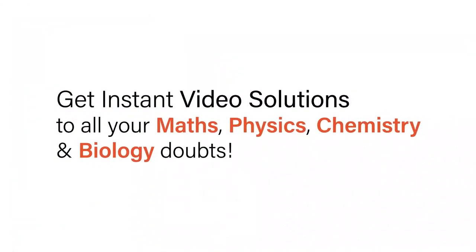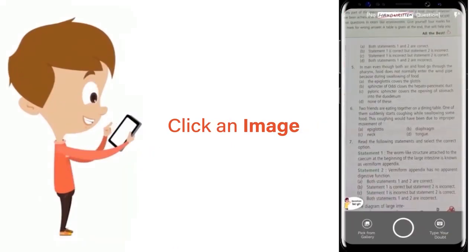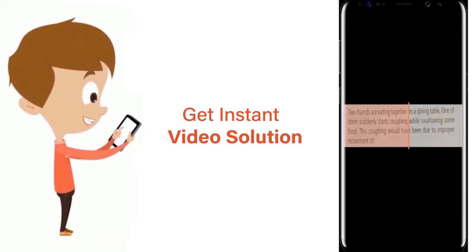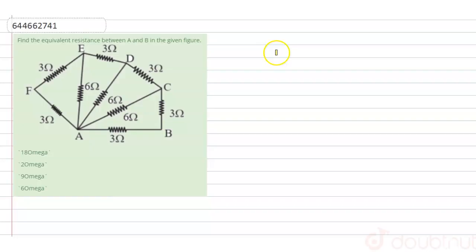With Doubtnut, get instant video solutions to all your math, physics, chemistry, and biology doubts. Just click the image of the question, crop the question, and get instant video solution. Download Doubtnut app today. Hello, the question says find the equivalent resistance between A and B in the figure.